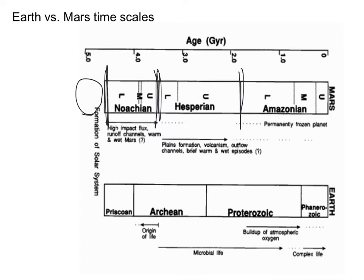Here's the time frame on Earth for comparison. The dinosaurs got killed off about right in here, and this is about how long humans have been around. Four and a half billion years is an incredible span of time — very difficult to think about, but that's the framework we need to use.